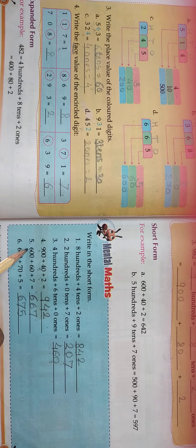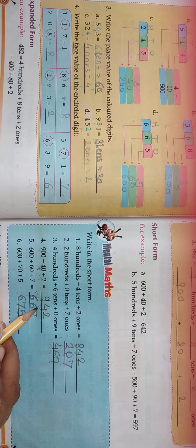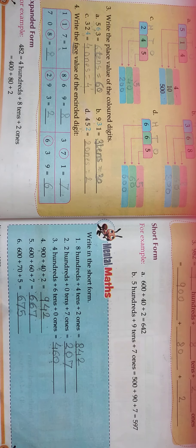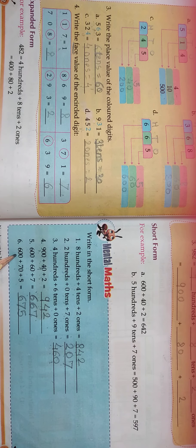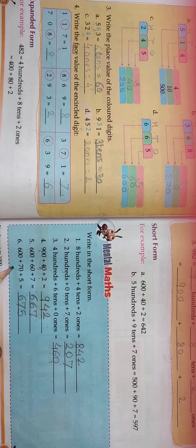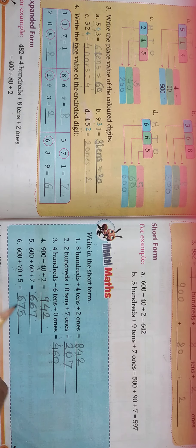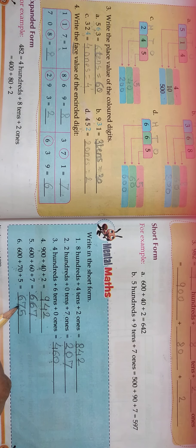Next: 600 + 60 + 7. 600 and 6 tens means 60. So you just write 6 and 7 ones. Then 600 + 70 + 5. 7 tens means 70. So you write 600s, 7 tens and 5 ones. The number is 675.